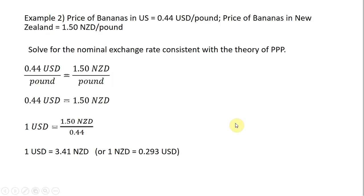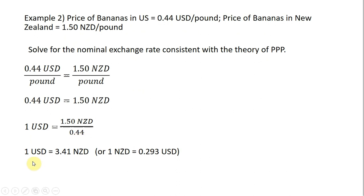One more example. The price of bananas in the U.S. is 0.44 U.S. dollars per pound, or 44 cents a pound. The price of bananas in New Zealand is 1.5 New Zealand dollars (NZD) per pound. Let's solve for the nominal exchange rate consistent with the theory of purchasing power parity. Using the same setup as before, the pounds cancel, and dividing through by 0.44, we get 1.5 divided by 0.44, which gives the implied nominal exchange rate: one U.S. dollar will get you 3.41 New Zealand dollars.